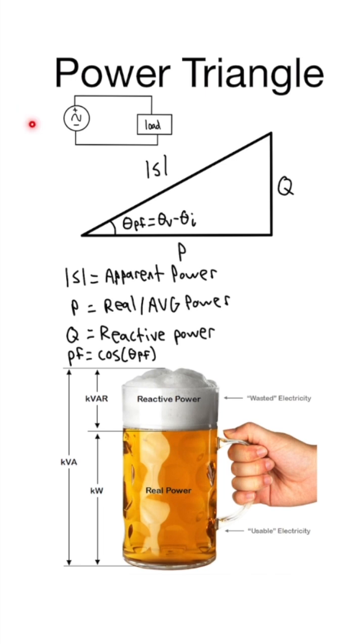So say we have 120 volt RMS voltage coming out of the wall, and we have some load that has capacitors, inductors, and resistors, and they all have some impedance Z.